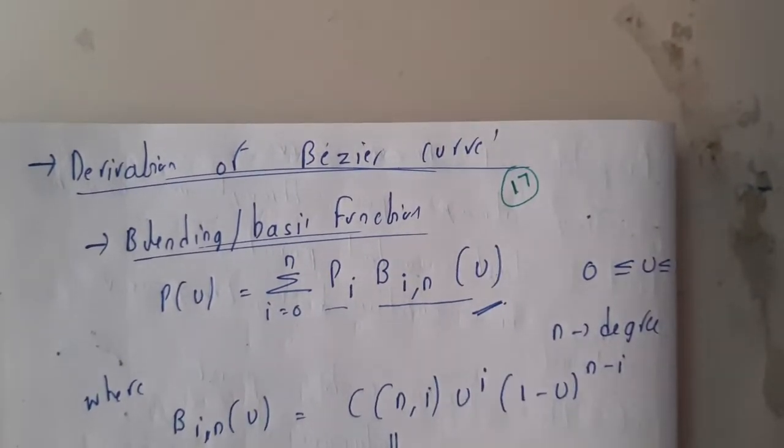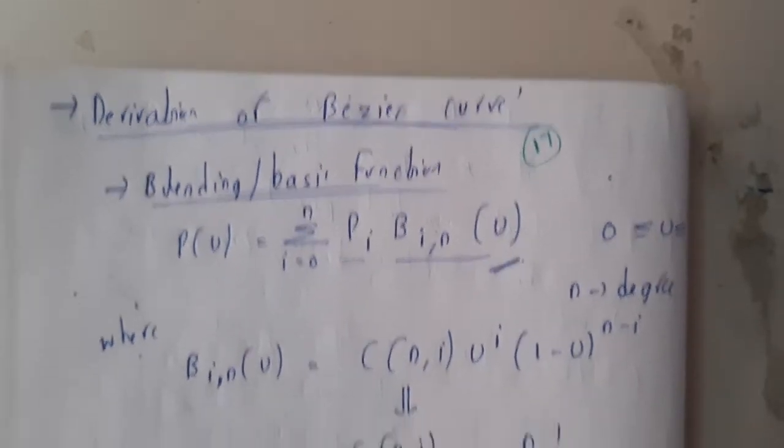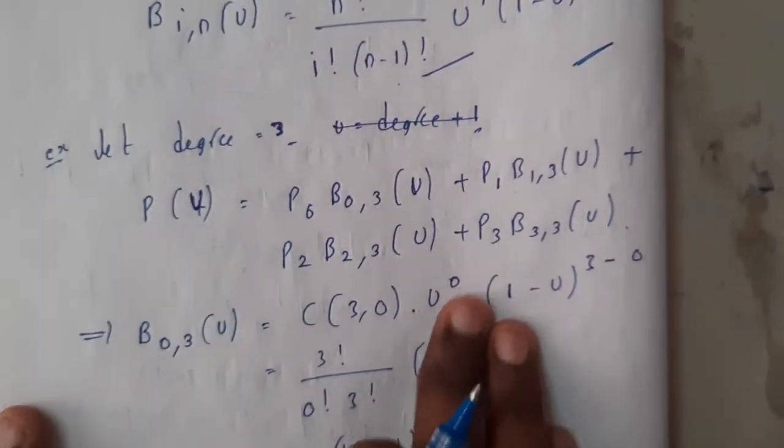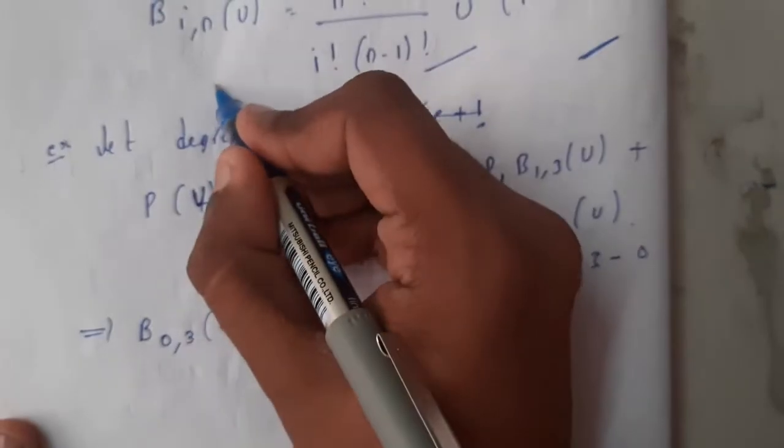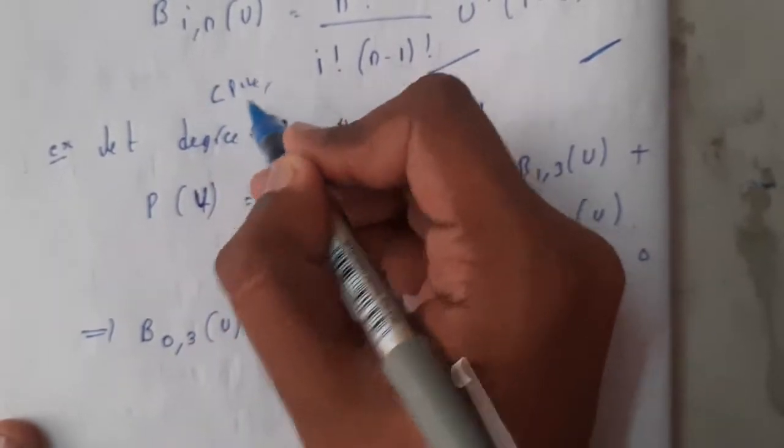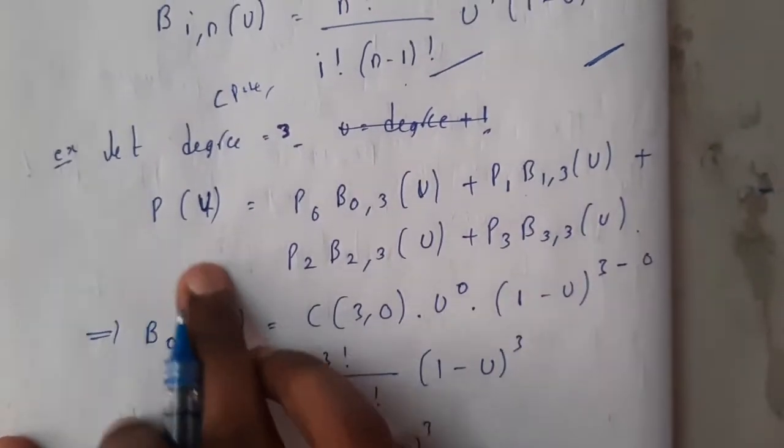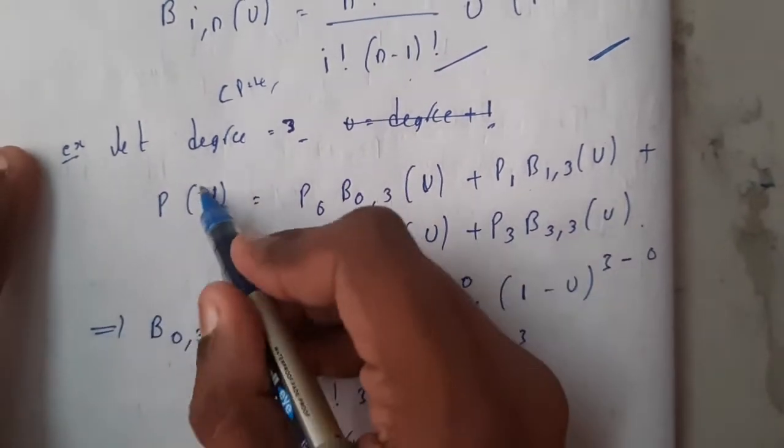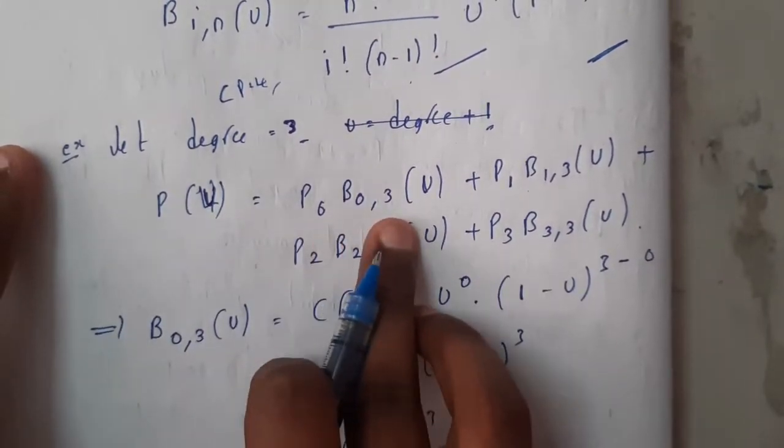For our basic example, let us assume the degree as 3, so it indirectly says that the control points are 4. So it says that P(u) equals P_0 B_{0,3}(u)...